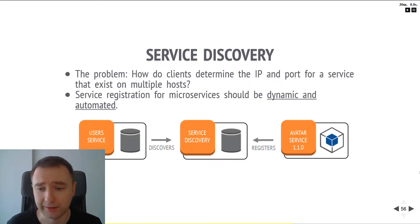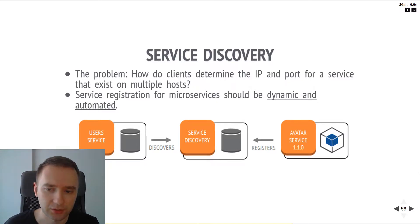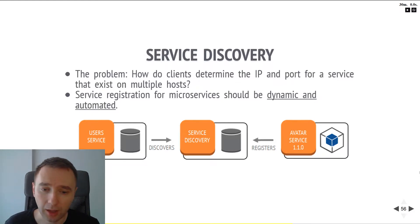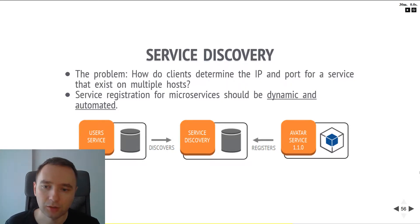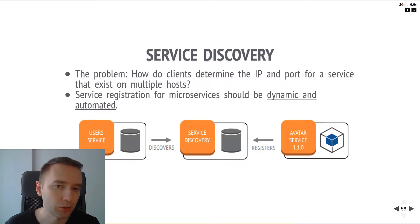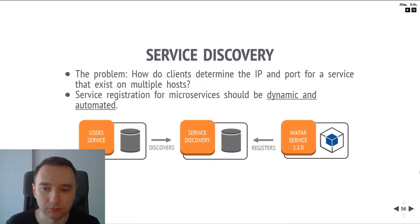You've probably heard about things like Zookeeper, or etcd, or Consul, or some sort of service discovery. But if you don't know what it is, it's kind of really simple. It's really an answer you have to give to a simple question and problem: if you have a microservice, how do you know what port and IP you should connect to?